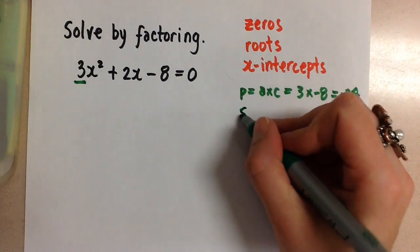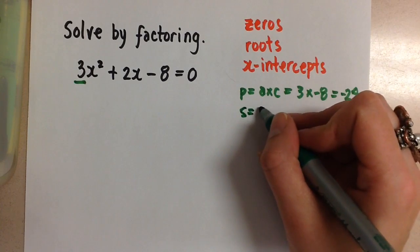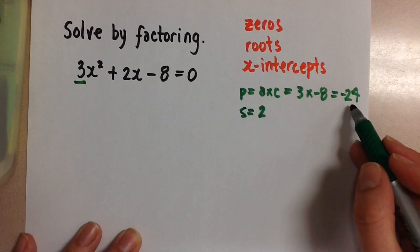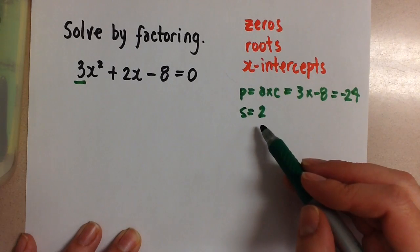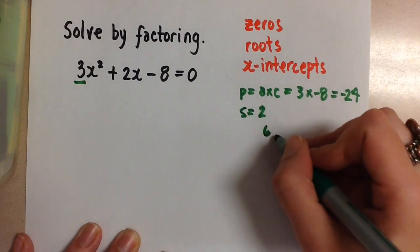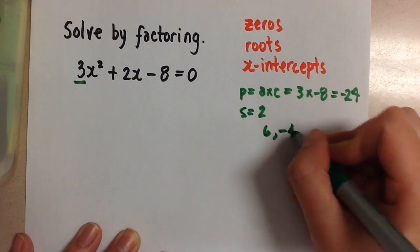And our sum is positive 2. So we are looking for two numbers that multiply to negative 24 and add to positive 2. And those two numbers are going to be positive 6 and negative 4.